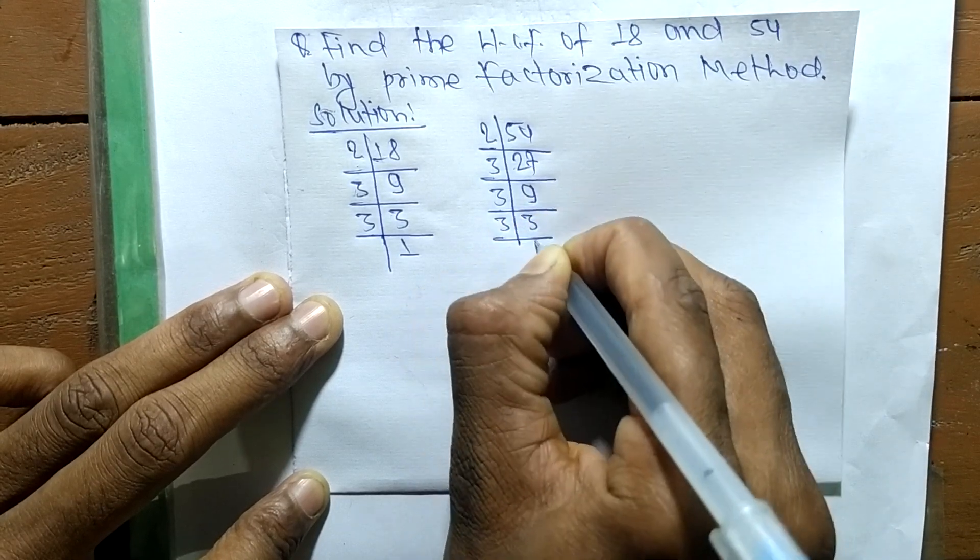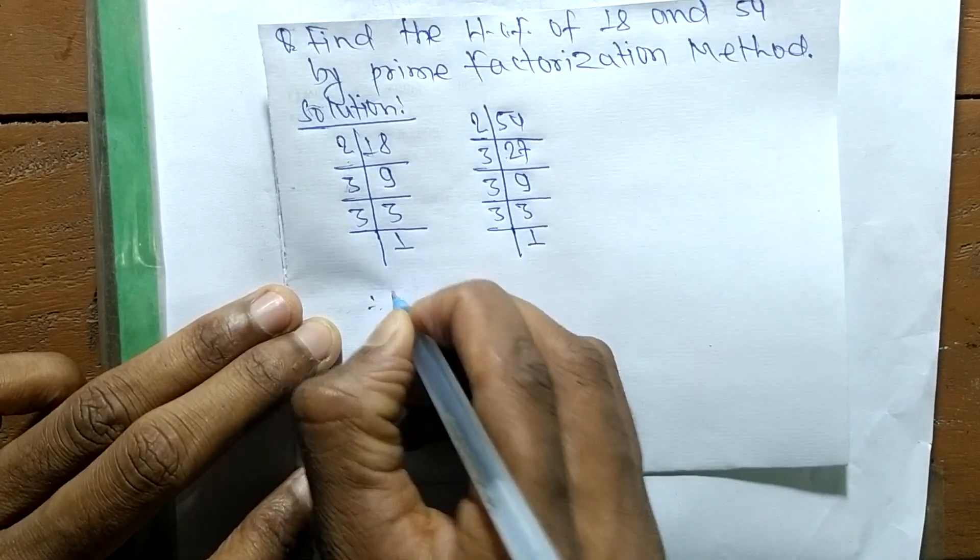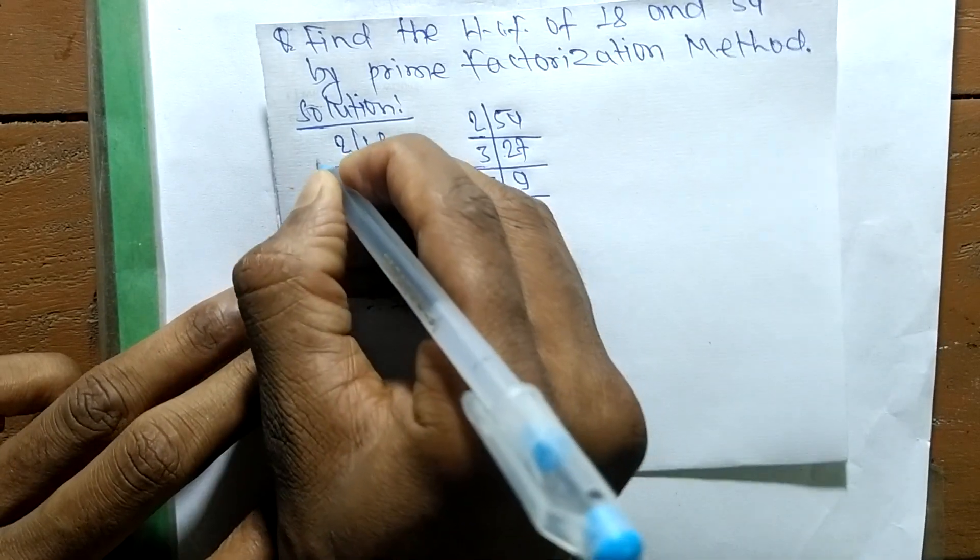and 3 times 1 means 3. So now from these prime factors we can write 18 is equal to, from